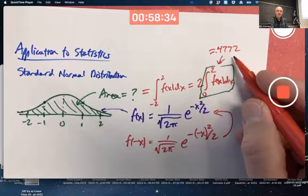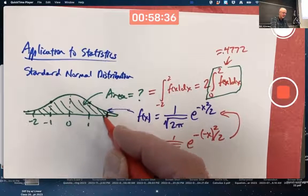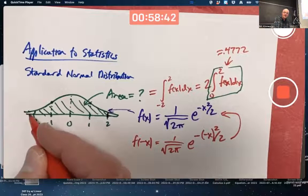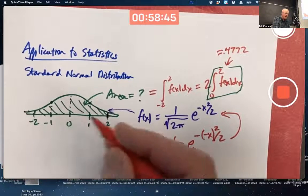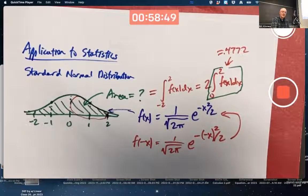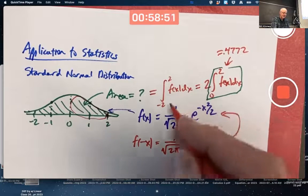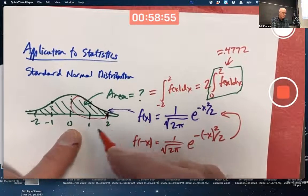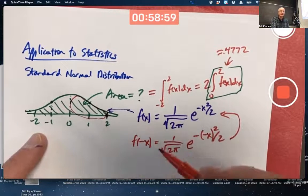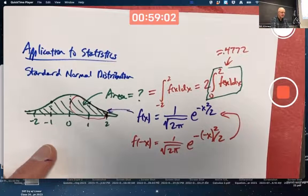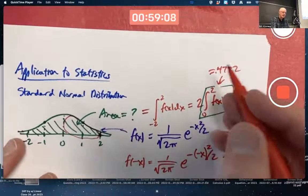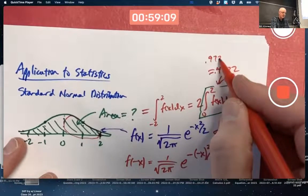But that number minus 0.5 is 0.9772 minus 0.5 is 0.4772. Why did I subtract 0.5? Because the table gave me the area under this curve to the left of 2 forever, including to the left of negative 2. I wanted just this area right here for this integral. So, I had to subtract the area to the left of 0, which by symmetry is 0.5. It turns out the total area under this curve is 1. I forgot to mention that. So, the area to the left of 0 is 0.5. So, that 0.9772 minus 0.5 is what this integral is.